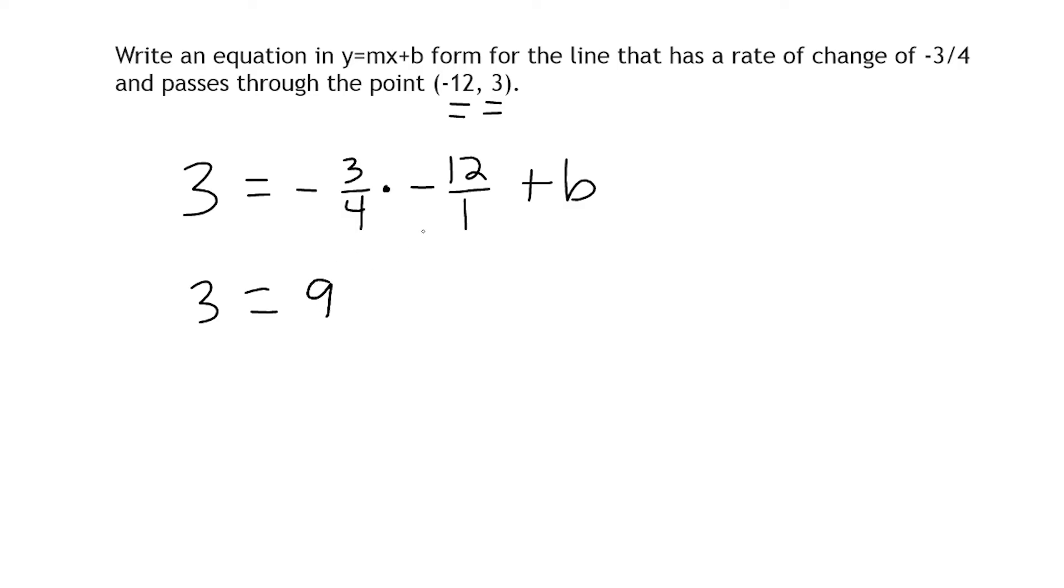And the product of negative three-fourths and negative 12 over 1 would be positive 9. Now what I did is a little bit of mental math here. I knew that I was multiplying a negative by a negative, so I already knew my answer was going to be positive. And for the numerator we have a product of 36 and for the denominator a product of 4. So I just took 36 and divided it by 4, which gives us 9.